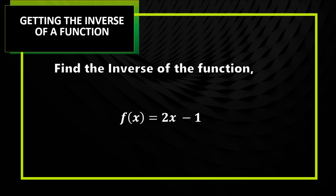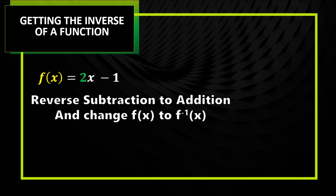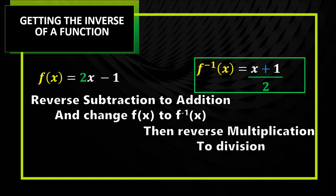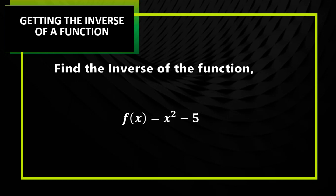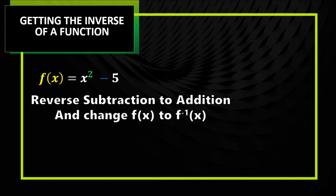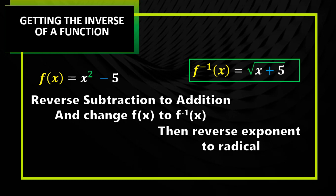Next: find the inverse of f of x equal to 2x minus 1. Again, reverse the subtraction to addition and change f of x to f⁻¹ — so minus 1 becomes plus 1. Then the 2 (the green 2) — you make it division by 2, kasi ang reverse ng multiplication is division. So we have x plus 1 over 2, and that will be the inverse of our function. Find the inverse of f of x = x squared minus 5 — reverse the subtraction to addition, and reverse the exponent to radical: minus 5 becomes plus 5, squared becomes square root. And this will be the inverse of our function.